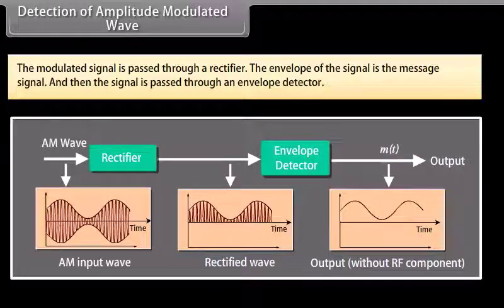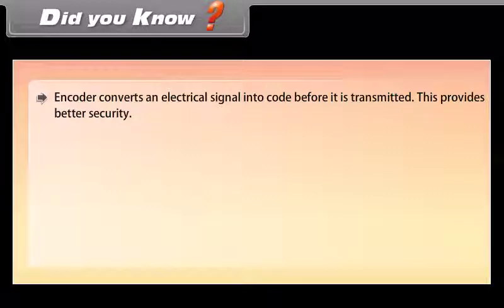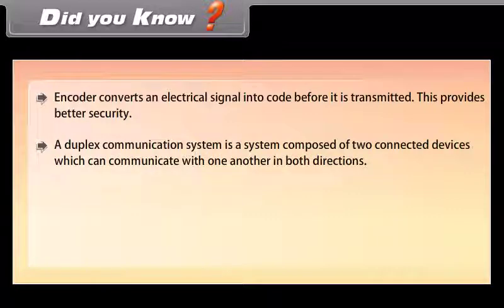Do you know? An encoder converts an electric signal into code before it is transmitted, which provides better security. A duplex communication system is composed of two connected devices which can communicate with one another in both directions.